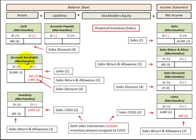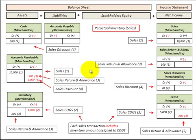When selling goods, we assign the gross amount to accounts receivable and record it in the sales revenue account, and we also account for inventory at its cost basis — reducing inventory by that cost amount and assigning it to cost of goods sold. For sales returns and allowances, we record the return at the gross amount in the sales allowance account, and adjust inventory and cost of goods sold at the cost basis.